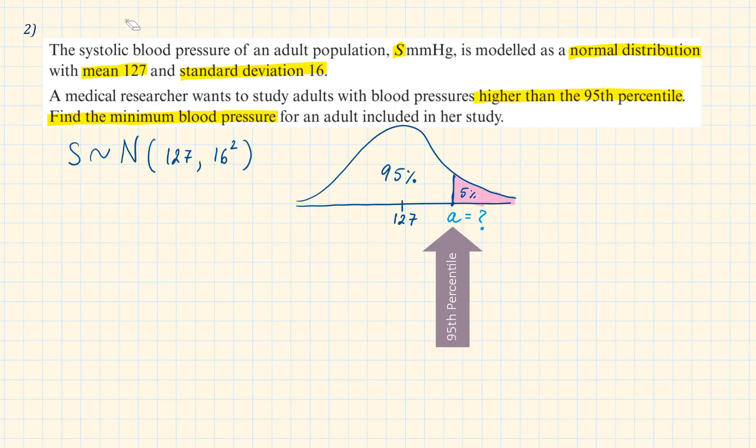Below the 95th percentile there are 95% of the values. So the area under the graph is 95%. Above that the area under the graph is 5% which is shaded in pink.